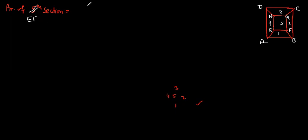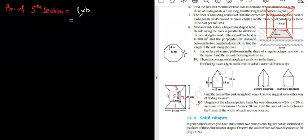I'm not going to label it right now, I'm just erasing that. So area of fifth section: L into B is the formula for that. What was the length? 16, 20. 320. Is your answer correct? Yes, it's correct.